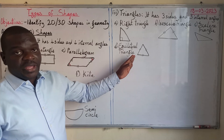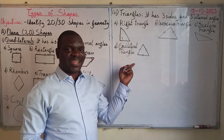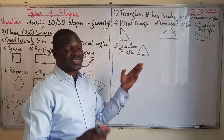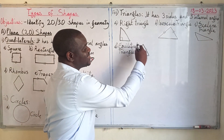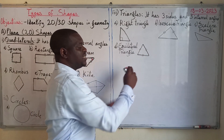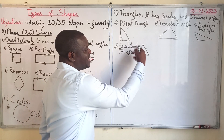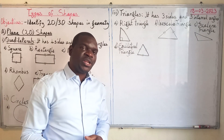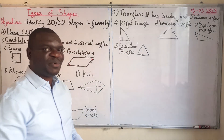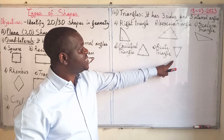A scalene triangle is different because all its sides have different lengths. Next is an equilateral triangle — it is called equilateral simply because all its sides are equal, and all its internal angles are equally the same.